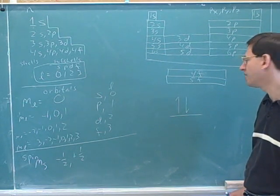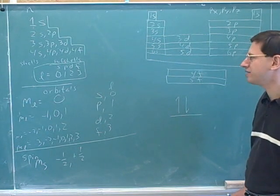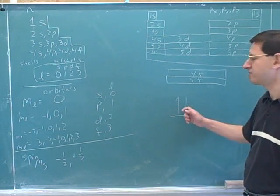You're excluded from having all four numbers the same. So if you're in the same shell and the same subshell and the same orbital, you must have different spins.